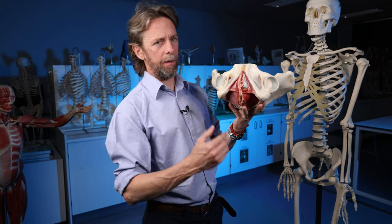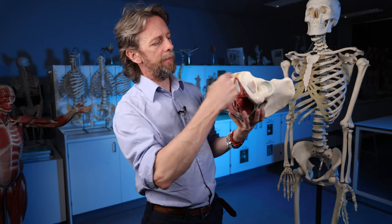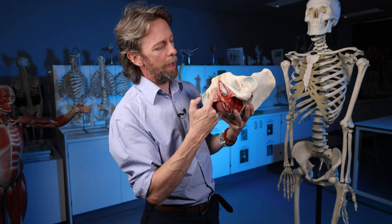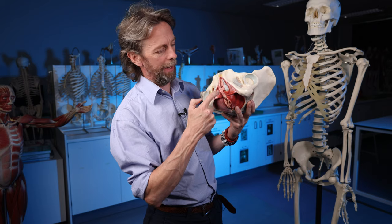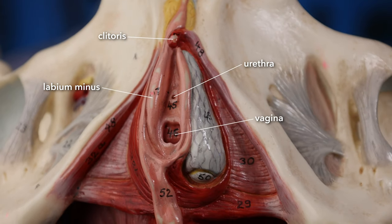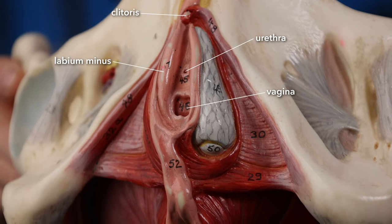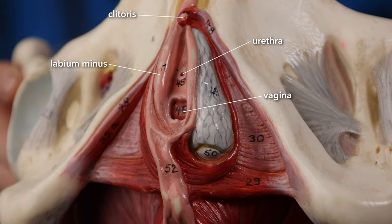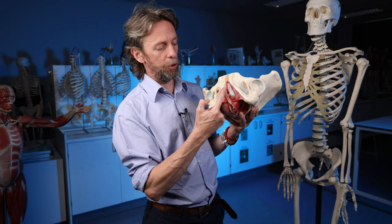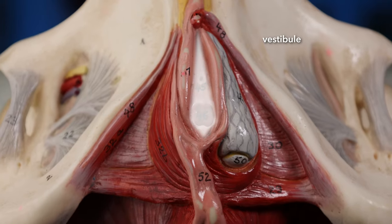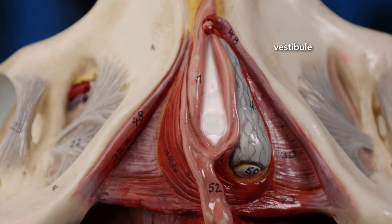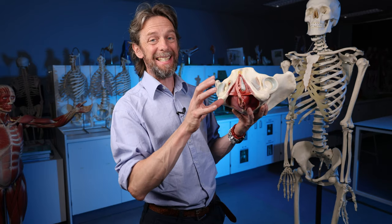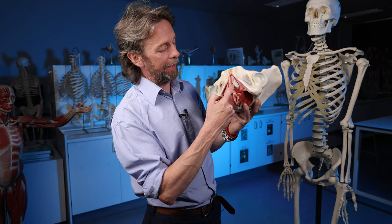Bartholin's glands are greater vestibular glands — glands of the vestibule. What's the vestibule? So, female external genitalia: skin's been removed, but we can see the labia minora here, the opening of the vagina, the opening of the urethra, the clitoris up here. The vestibule is the area inside, medial to the labia minora and posterior to the clitoris. Vestibular glands are going to duct into the vestibule.